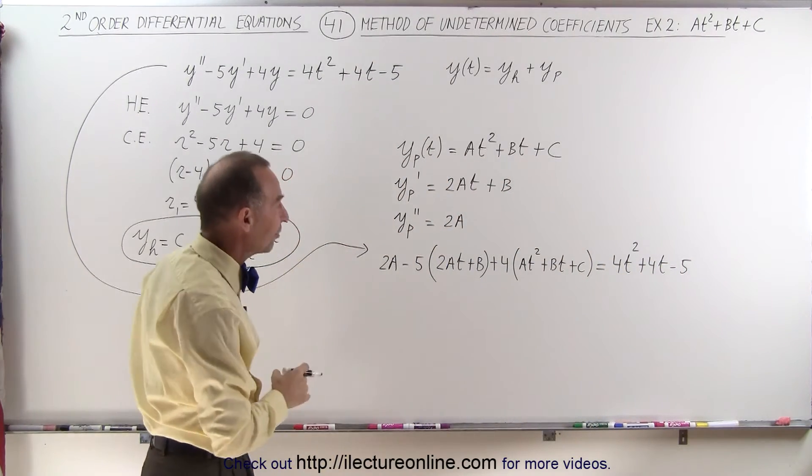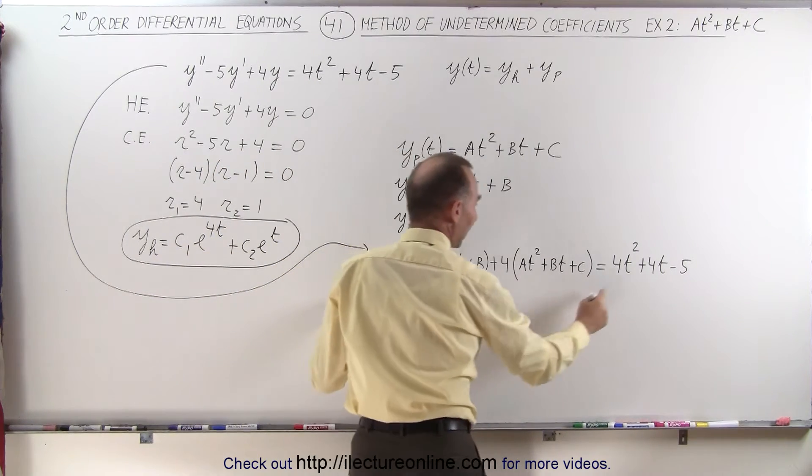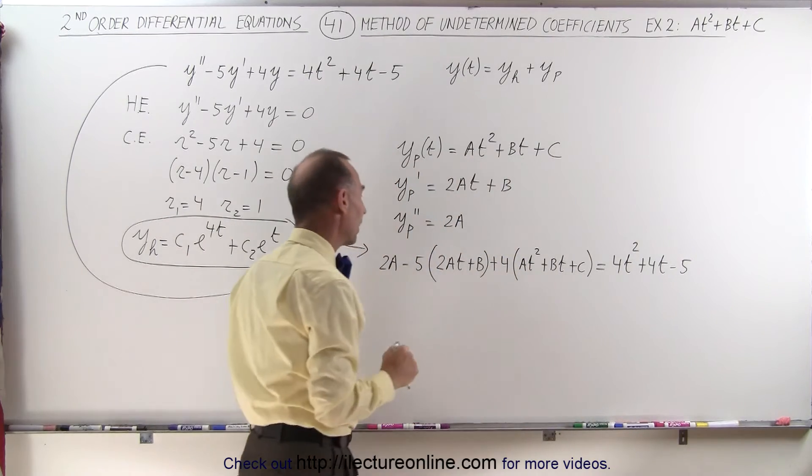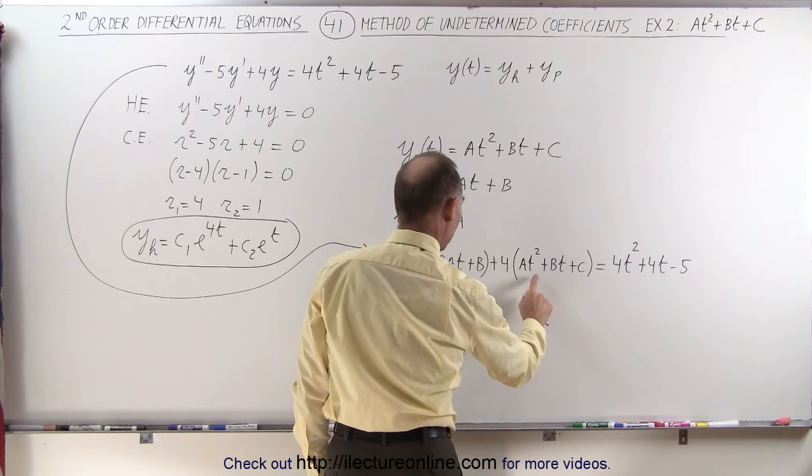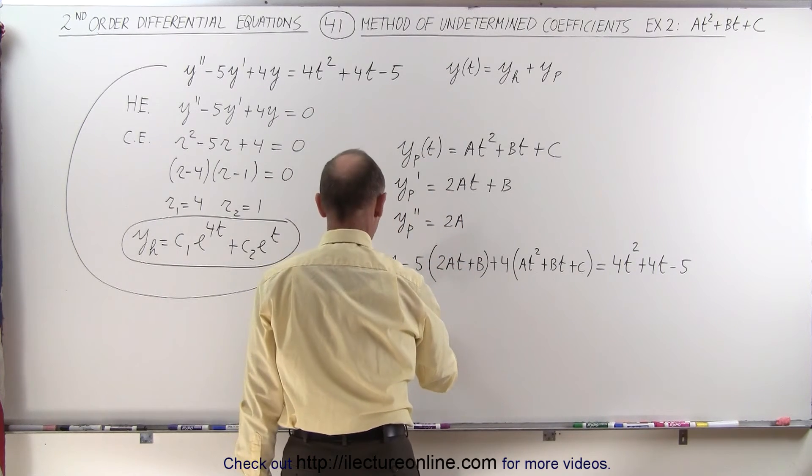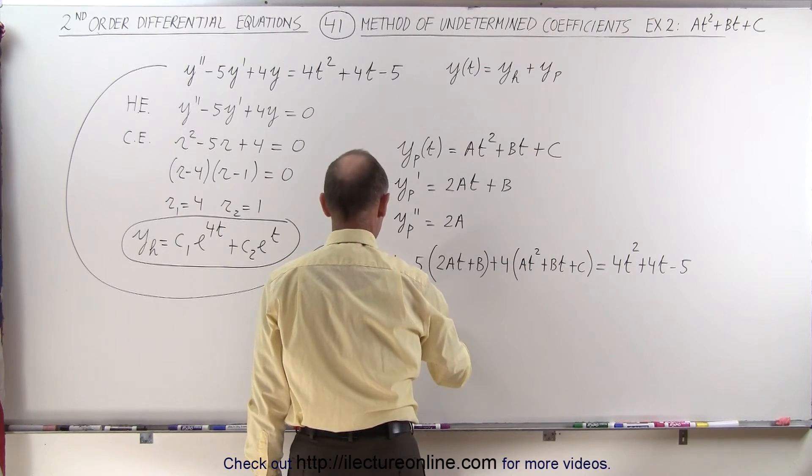So what we're going to do with the left side is we're going to group it together as a coefficient times t squared, a coefficient times t, and then just a number by itself. Notice we have only one t squared term right here. So we can pull it out and we can write this as 4a times t squared.